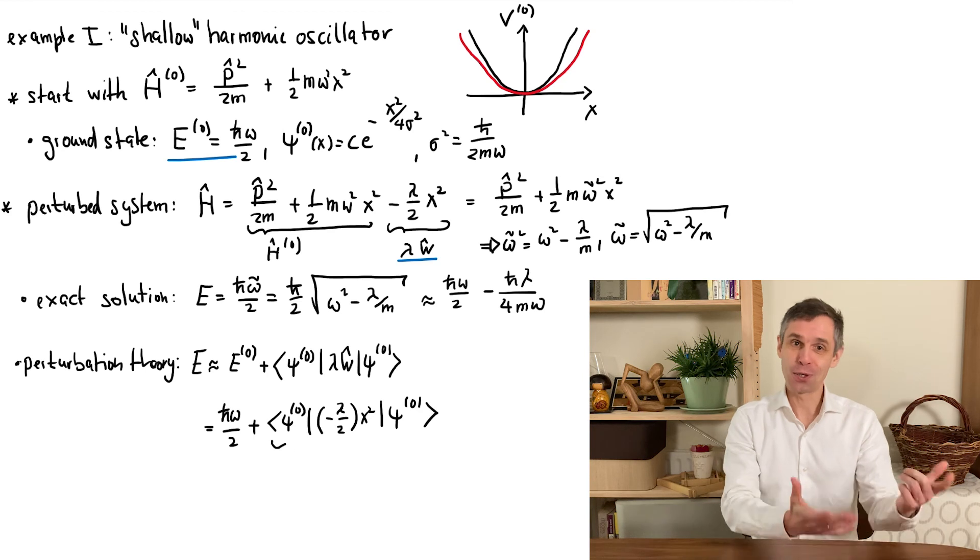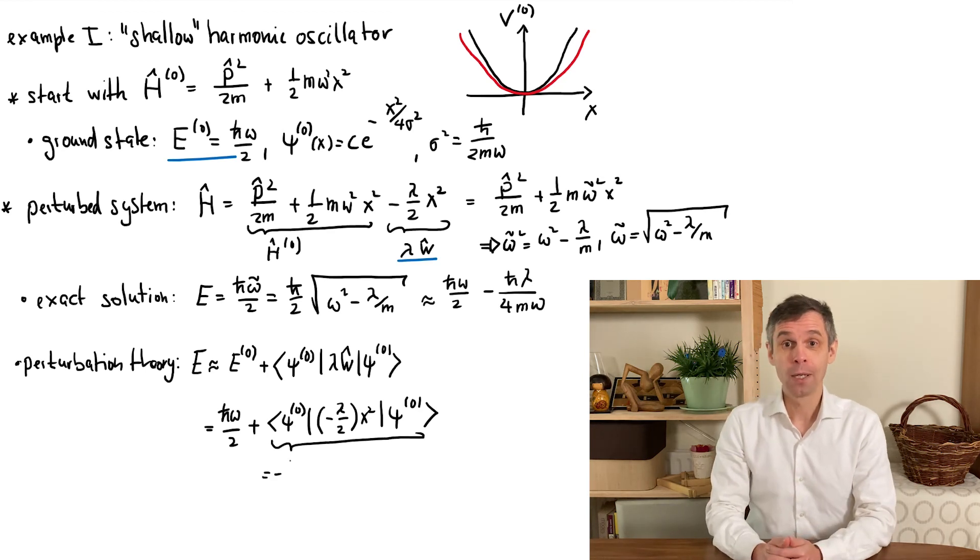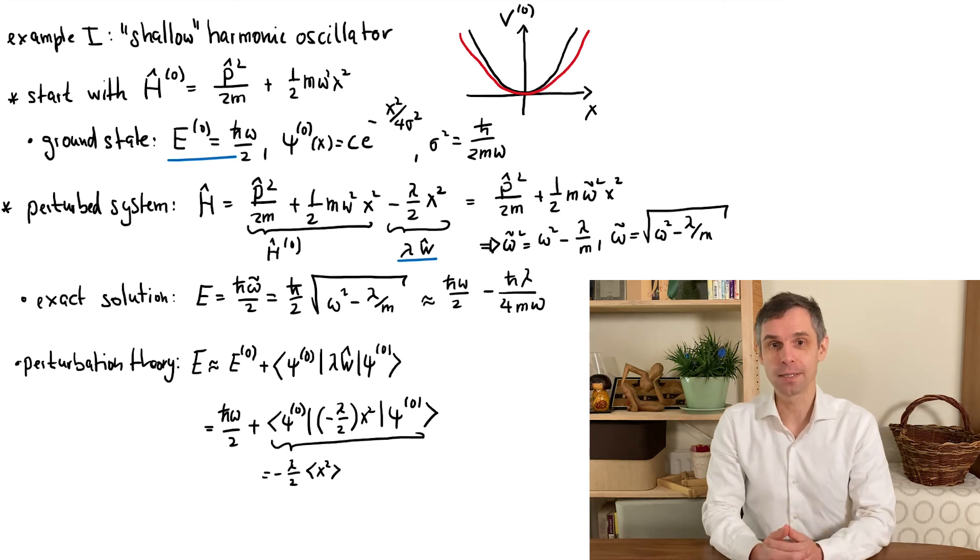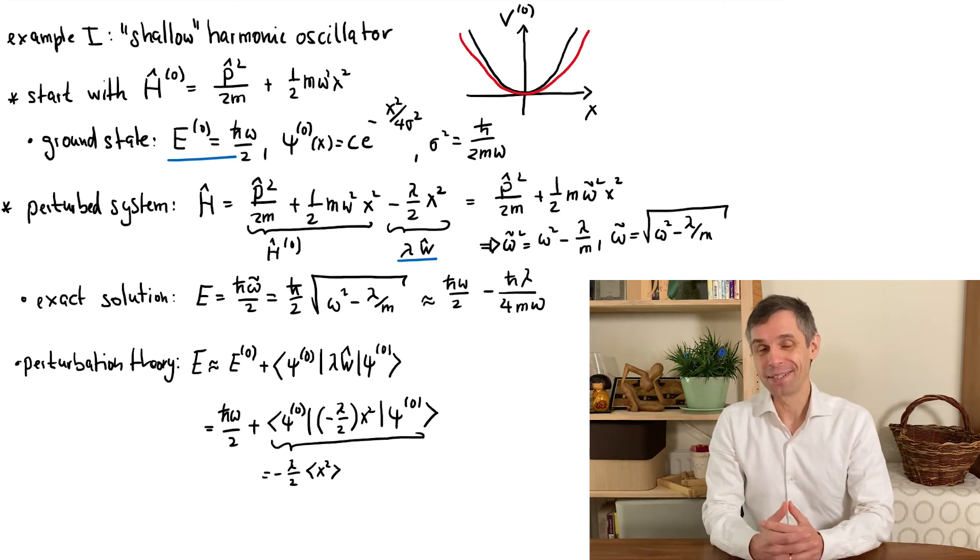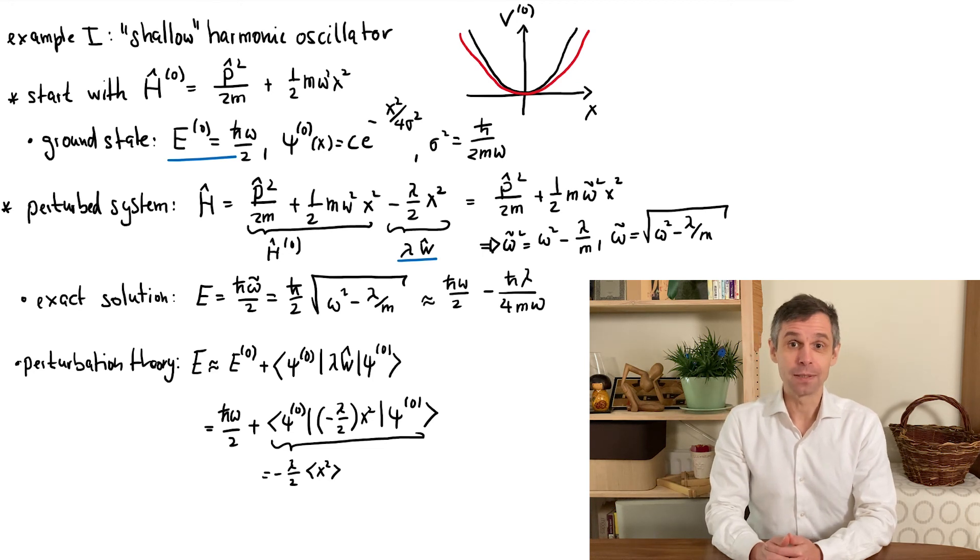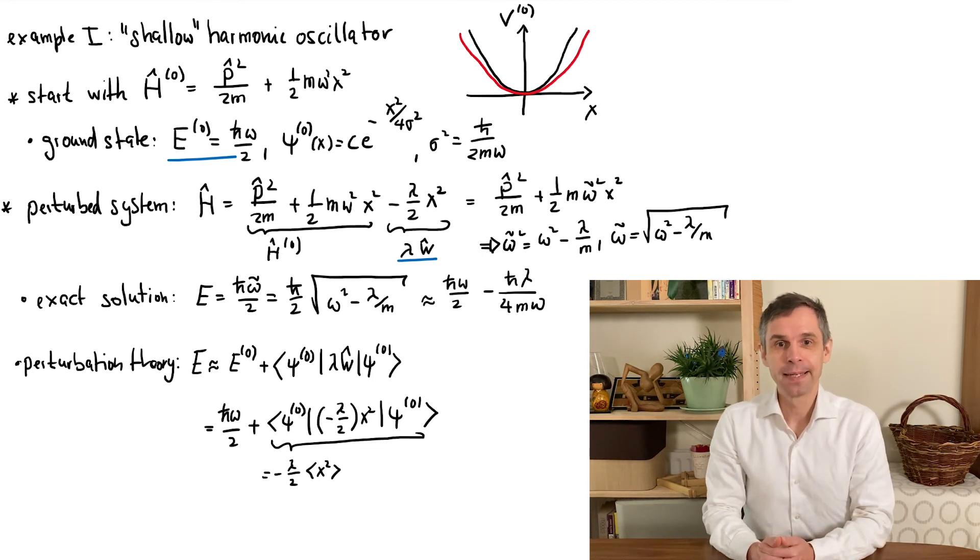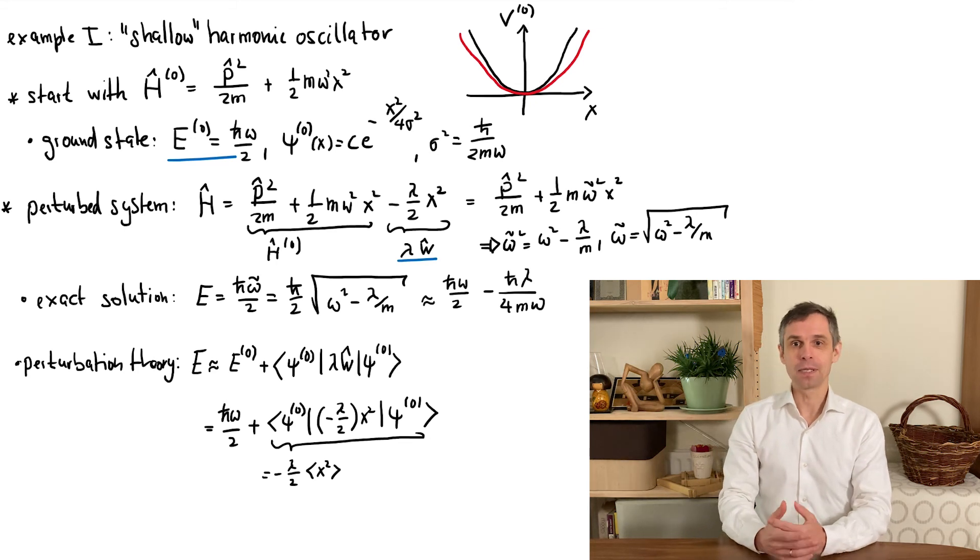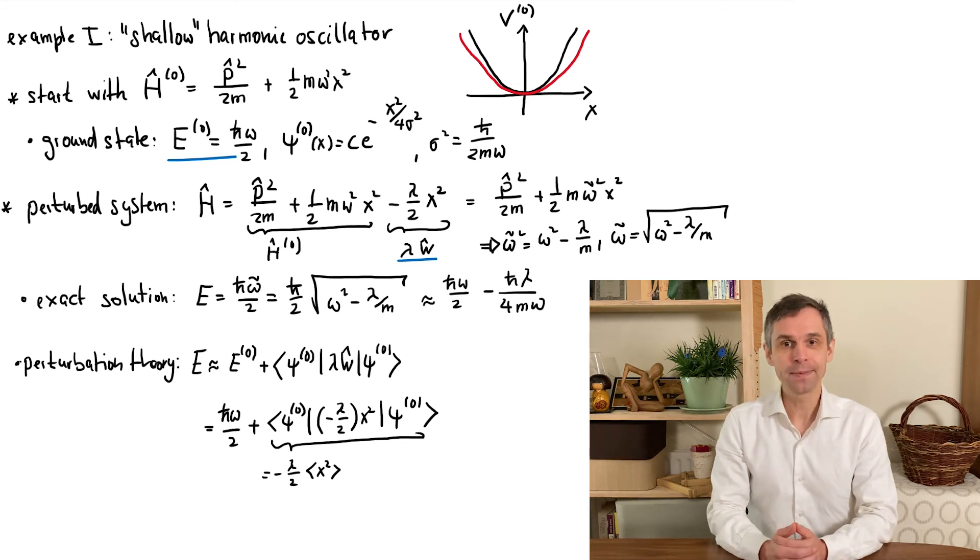By pulling out the constant minus lambda over 2, we see that this expectation value is proportional to the expectation value of x squared in the original system, which we already calculated before. We saw that this expectation value determines the width of the Gaussian wave function, and the result that we obtained was h-bar divided by 2m omega, which we also denoted as sigma squared.